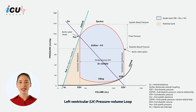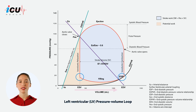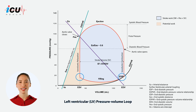The final phase of the pressure volume loop is ventricular filling. This phase begins with the opening of the mitral valve and ends with its closure. During ventricular filling, the volume of the ventricle increases as blood flows in from the left atrium, while the pressure remains relatively low and slightly increases at the end of diastole.